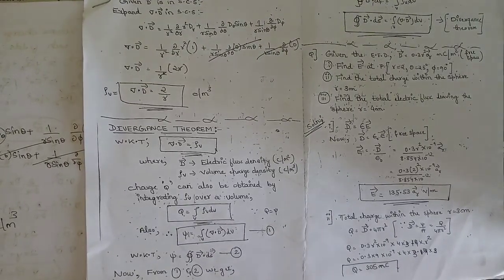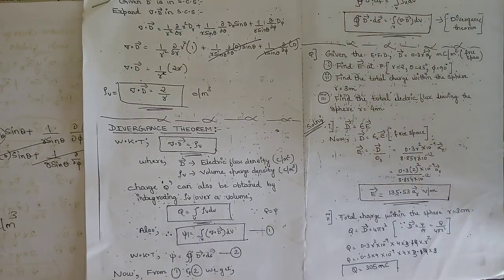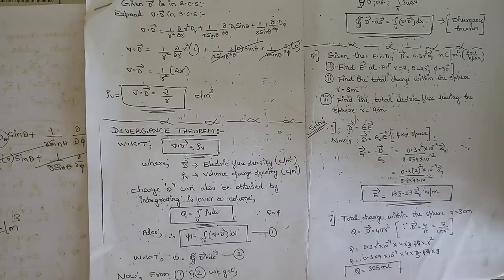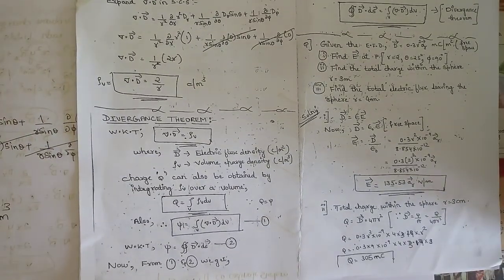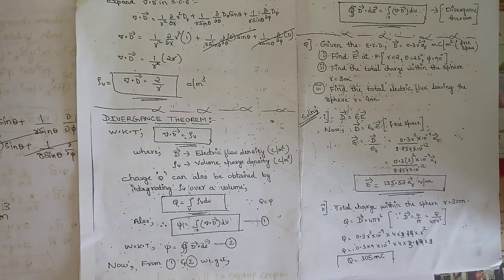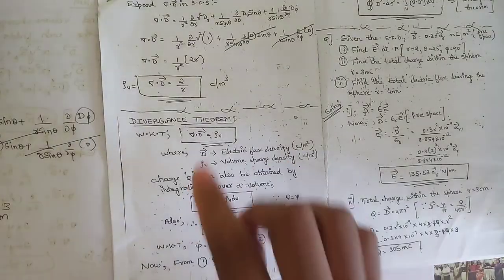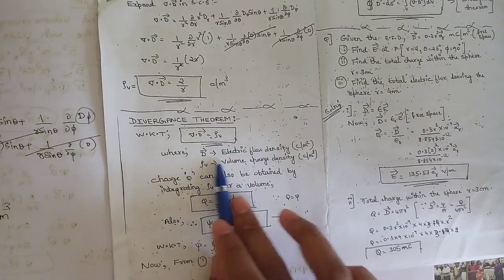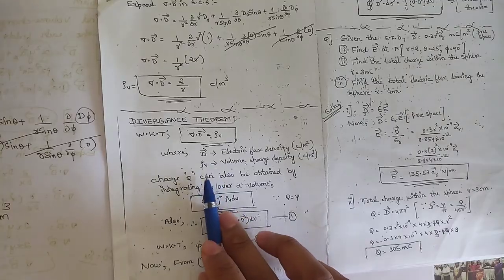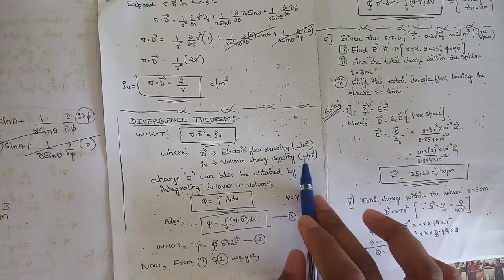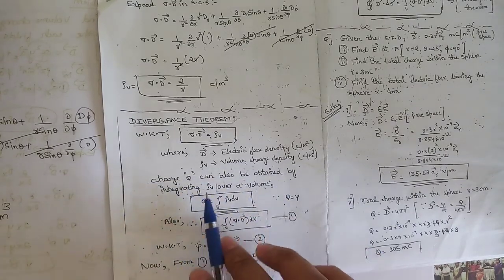Welcome back to today's session. After a busy schedule, we are continuing regularly. Today we continue with Module 2 of Electromagnetic Theory — specifically the Divergence Theorem. We will derive how the divergence theorem equation is obtained, starting from the basic equation del·D = ρv.